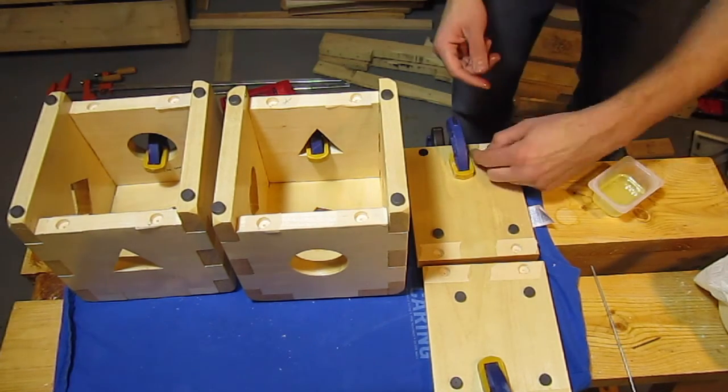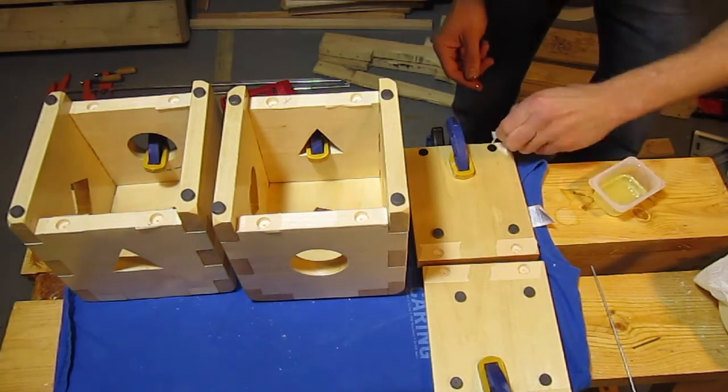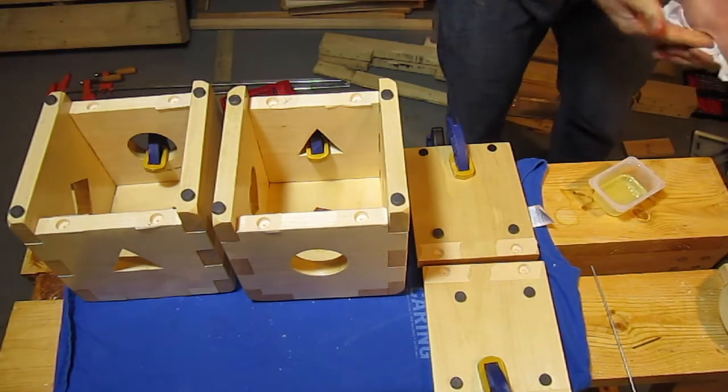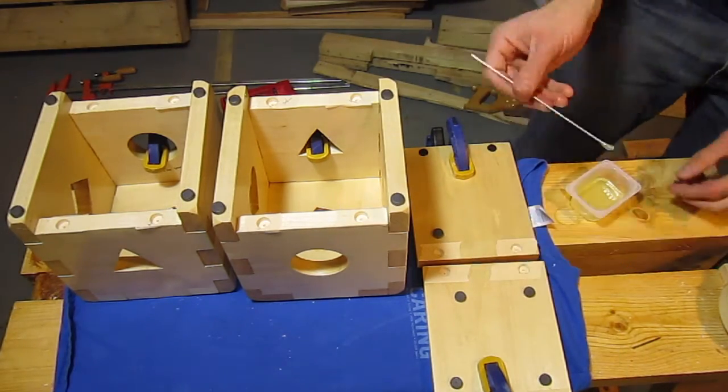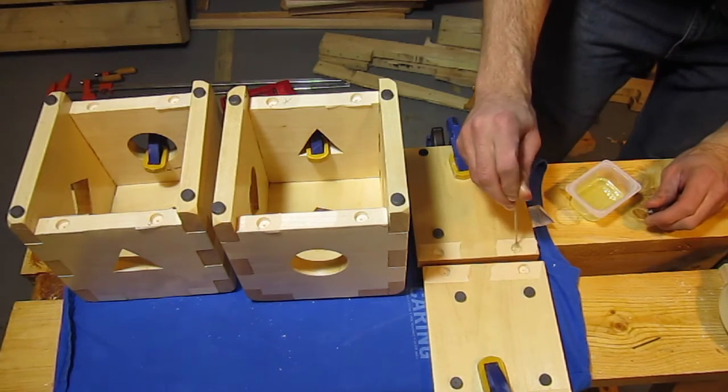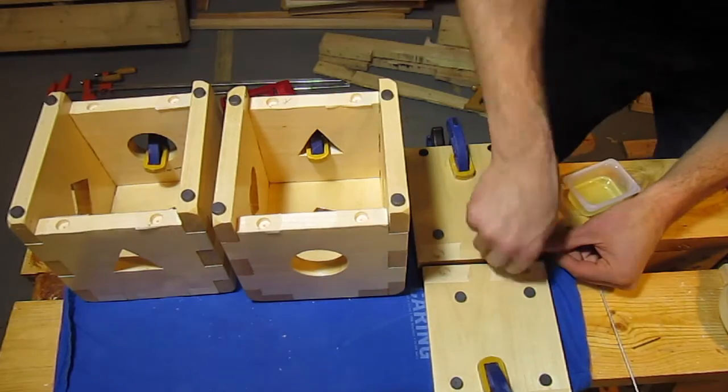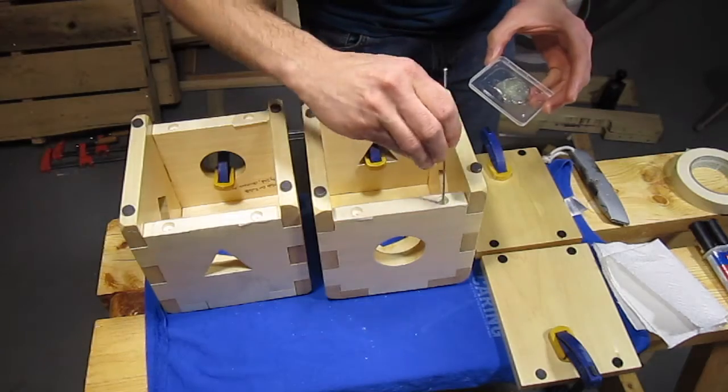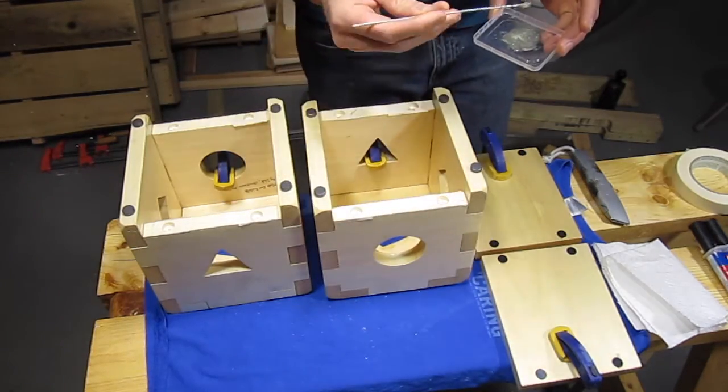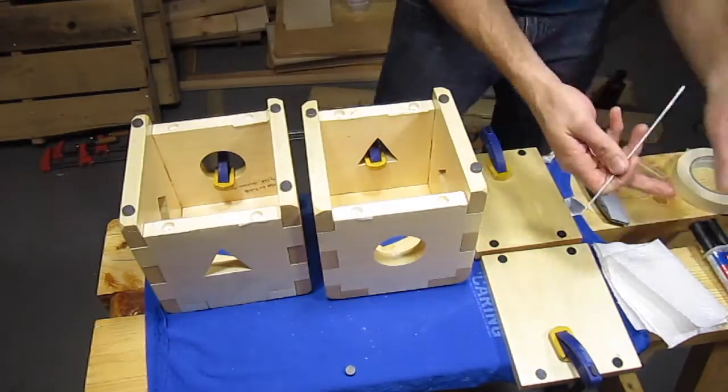I used 5 minute epoxy to glue in the magnets. As it turns out, when they say 5 minute epoxy, they really mean 5 minutes. The first batch I mixed up set up when I was about halfway through gluing the magnets in, so I had to run to the hardware store and buy another tube. The second time I mixed up a much smaller batch. You don't need much, as the magnets fit in the holes tightly.